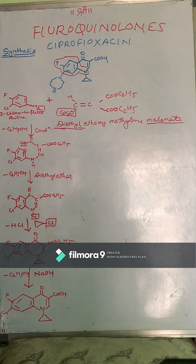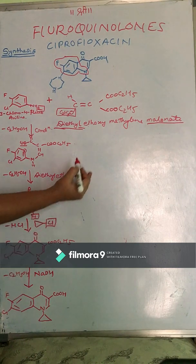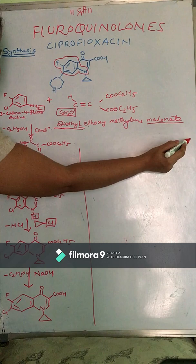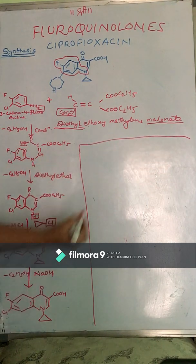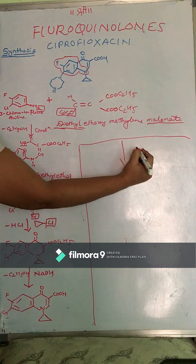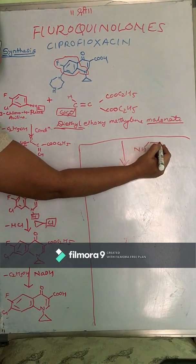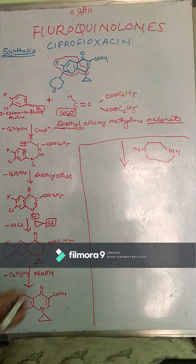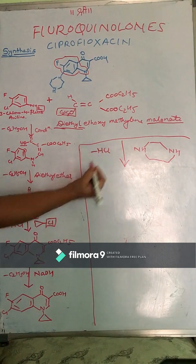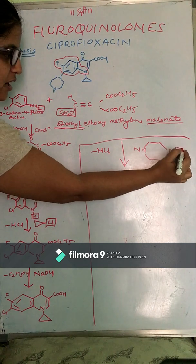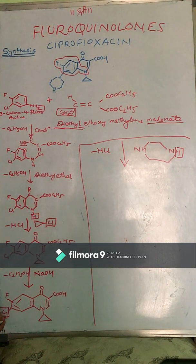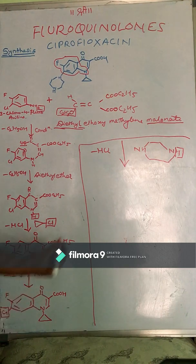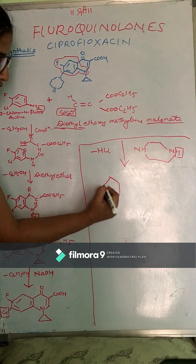Lastly, we need a piperazine ring at the seventh position. We take the piperazine nucleus and there is a loss of HCl — one hydrogen from the piperazine nitrogen and HCl from the seventh position of the drug are removed — and we get the final structure of ciprofloxacin.